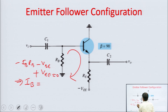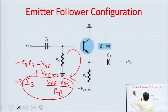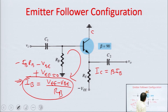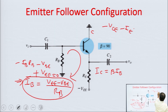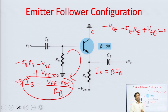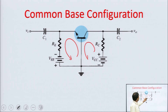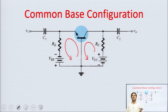Base current IB equals VEE minus VBE upon RB. From IB, collector current IC equals β·IB. For the output KVL equation: since the collector is grounded, the equation gives minus VCE minus IE·REE plus VEE equals zero, so VCE is easily calculated — this gives the operating point. For common base configuration, you can similarly write input and output KVL equations to find voltage and current.